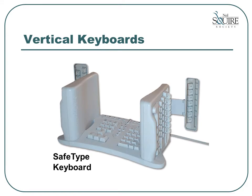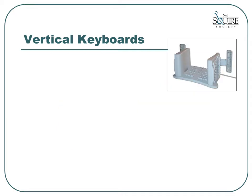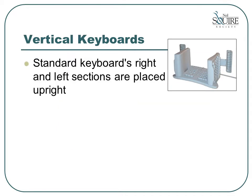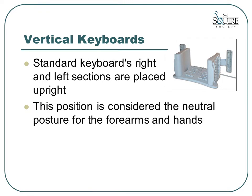Here we have one of the more unusual looking keyboards — this is called a vertical keyboard. With the vertical keyboard, the standard keyboard's right and left sections are placed in an upright position. This position is considered the neutral position for the forearms and hands. If you drop your hands to your side and then lift them straight up, you'll find that you are in the proper position for using this keyboard. For anybody who has difficulty twisting their arms so that their palm is facing downward, this keyboard may be a good alternative. However, holding your hands in this vertical position can be tiring.